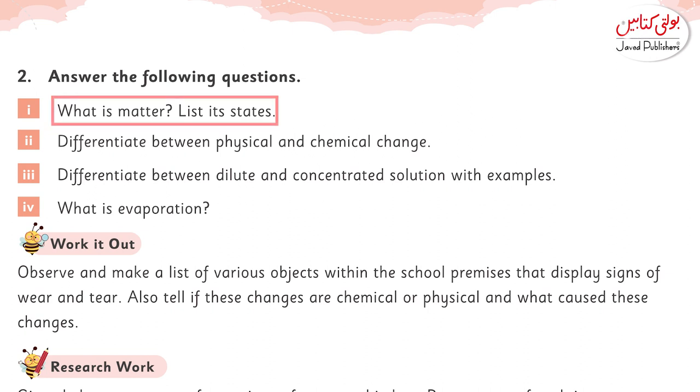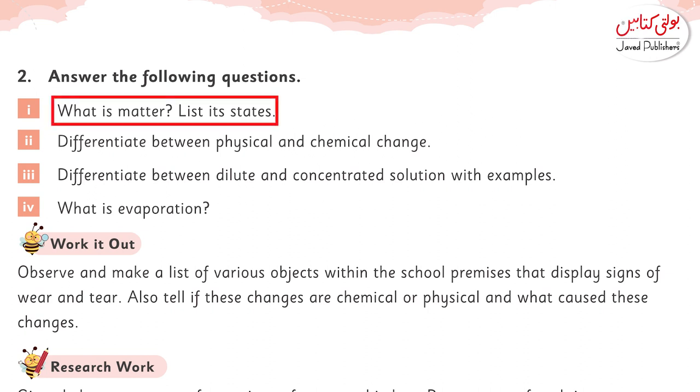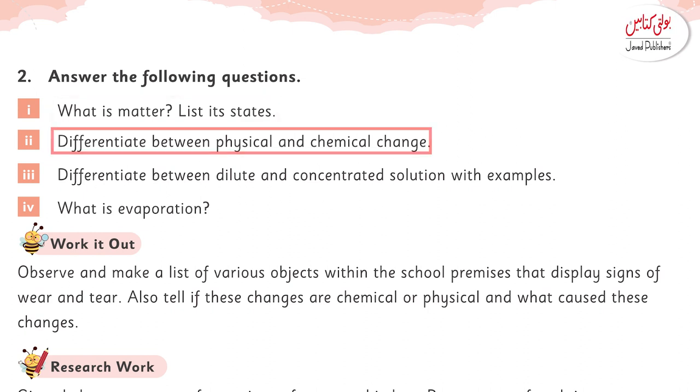Moving towards the following questions. What is matter? List its states. Anything that has mass and occupies space is known as matter. Matter exists in three states which are solid, liquid, and gas.